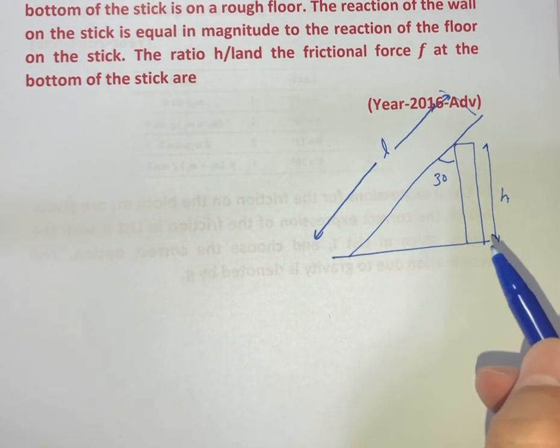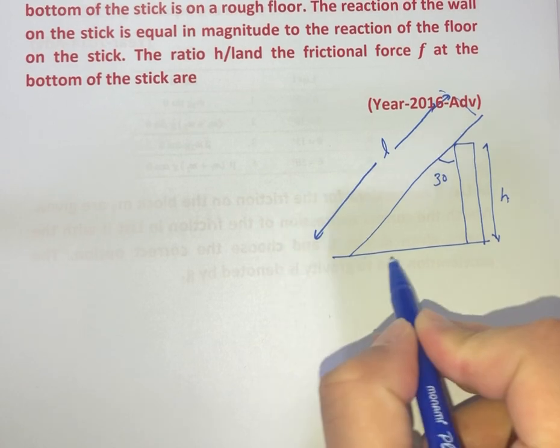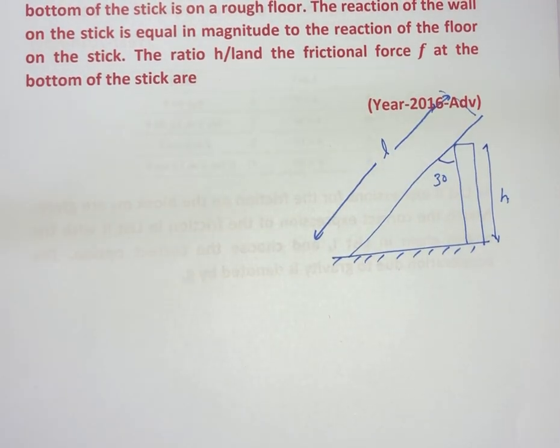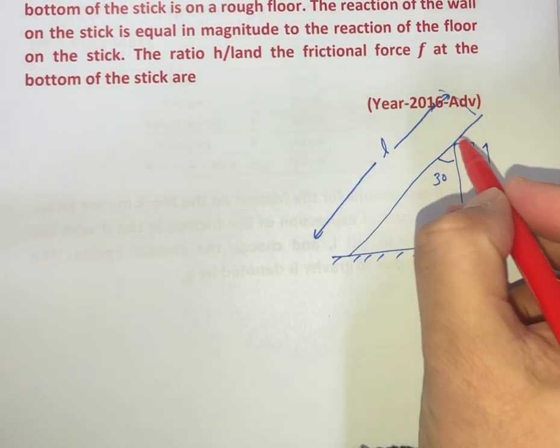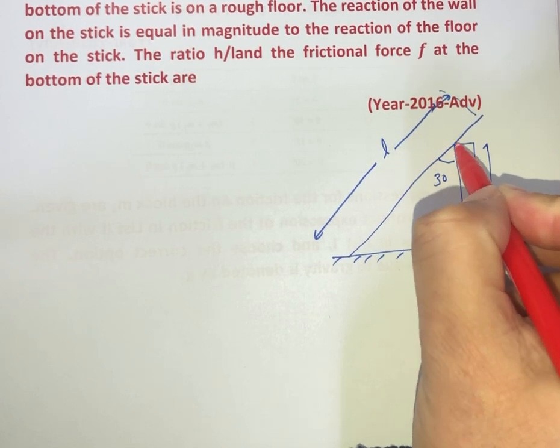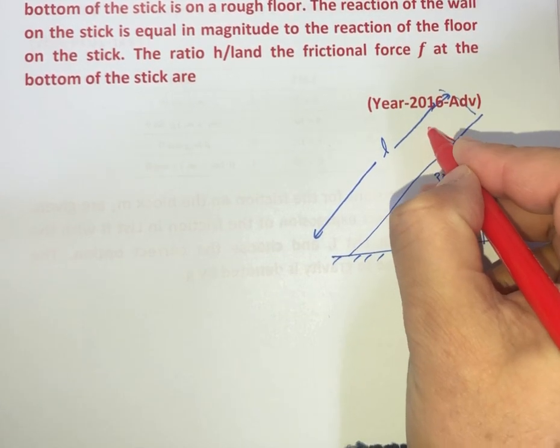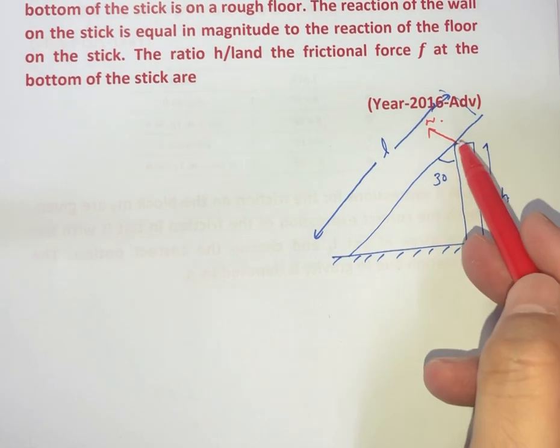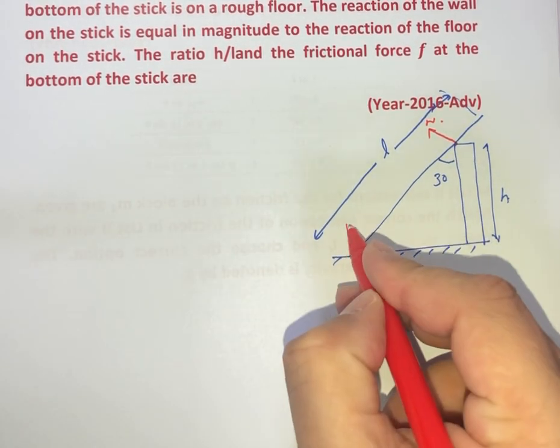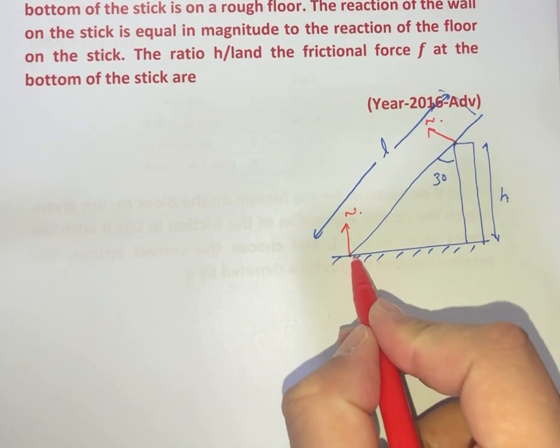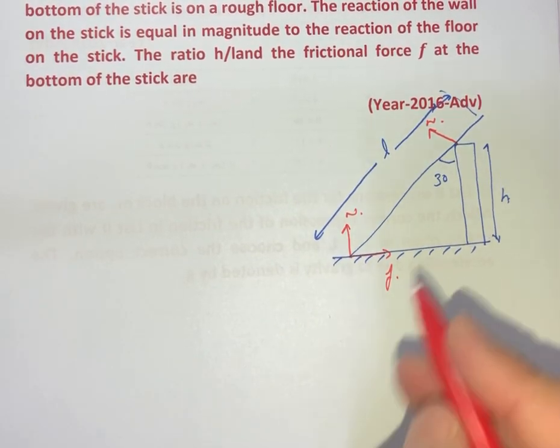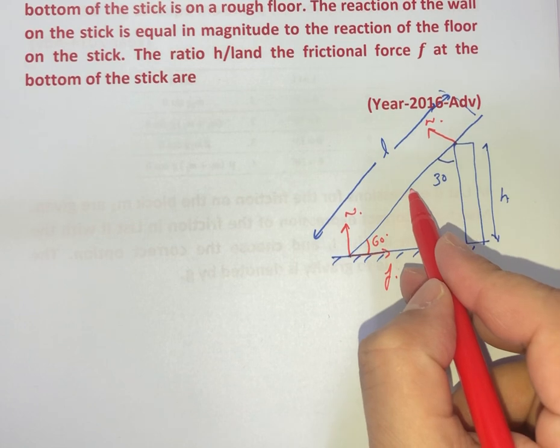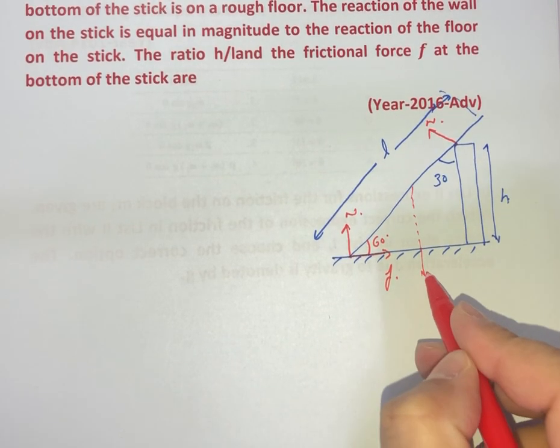And it is given that there is a friction between the floor and the stick. And there is a normal reaction between the wall and the stick perpendicular like this. Let us suppose that is N. And it is also given that the reaction between the floor and the wall is the same. So this reaction is also N. F is the frictional force. This angle will be 60. And in the downward direction there will be mg.